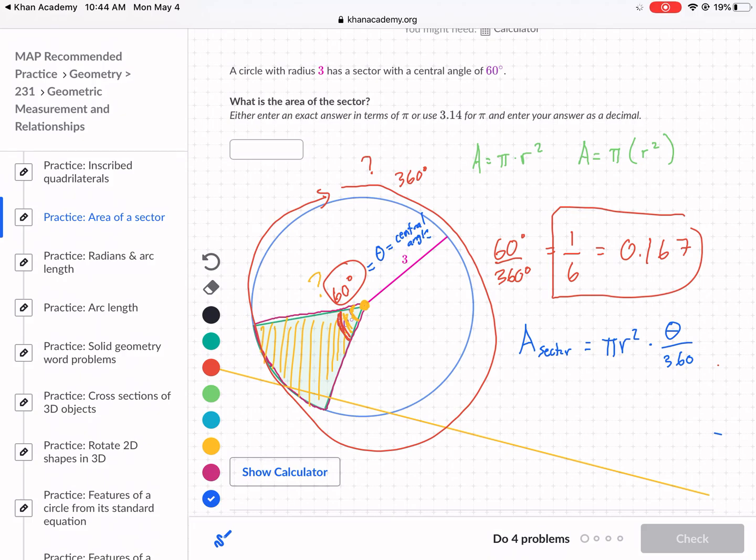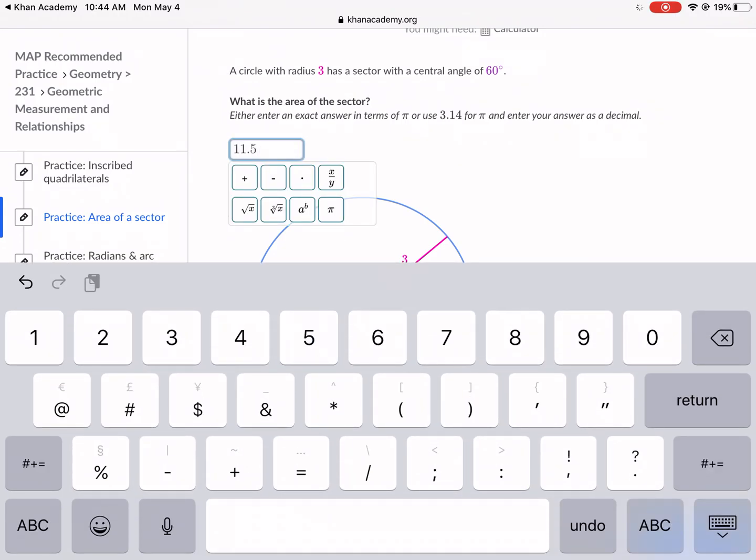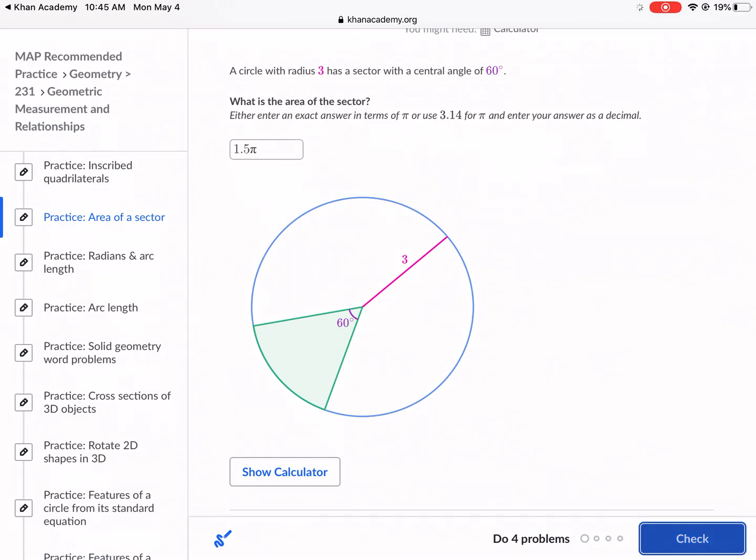So now we can just plug in our values. And we're going to leave in terms of pi because it says we can leave in terms of pi right here. My personal preference as a math teacher is to leave in terms of pi. So we're going to plug in 3, and we're going to square that first, multiplied by pi, multiplied by 60, divided by 360. So what I like to do is 3 squared, 9 times 60, and then just divide that by 360. And I get 1.5, don't forget the pi, and then it should be units squared. So we put 1.5 pi. We'll check it. There we go.